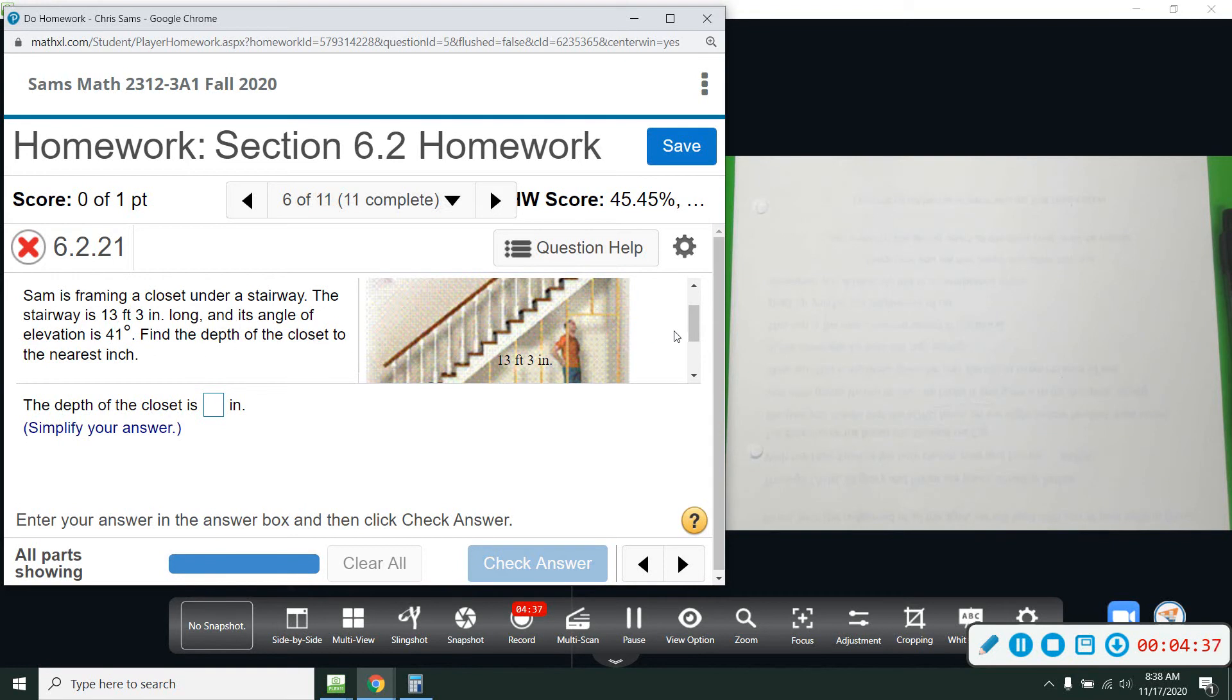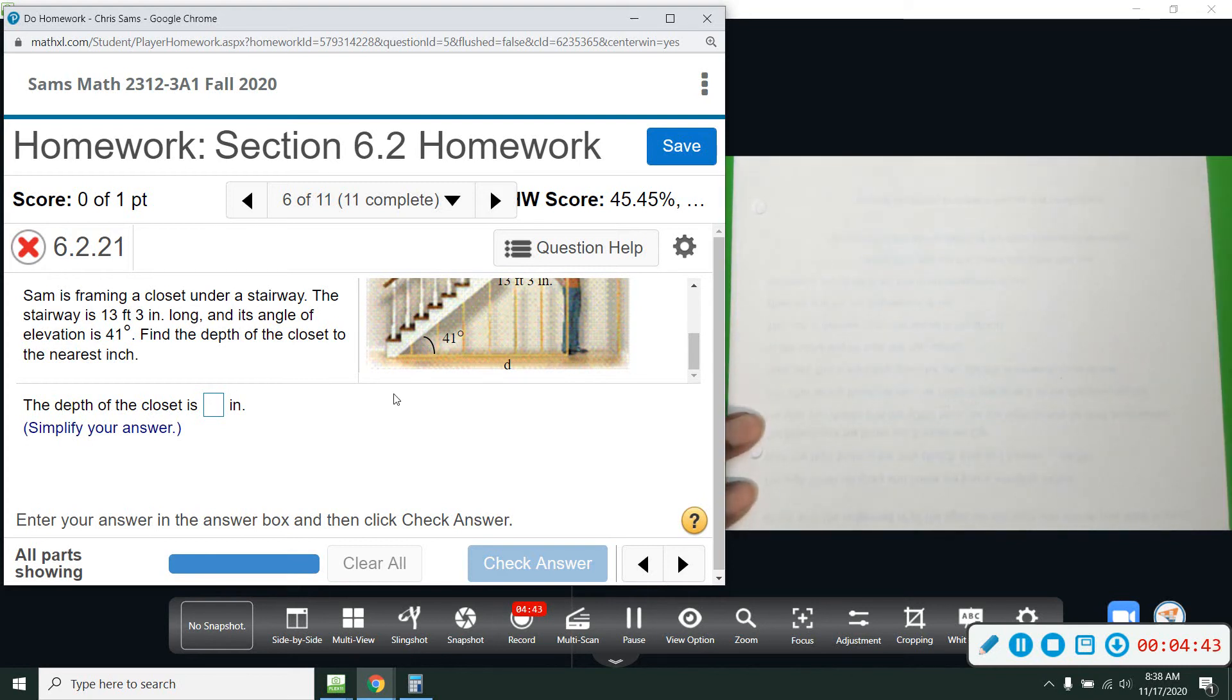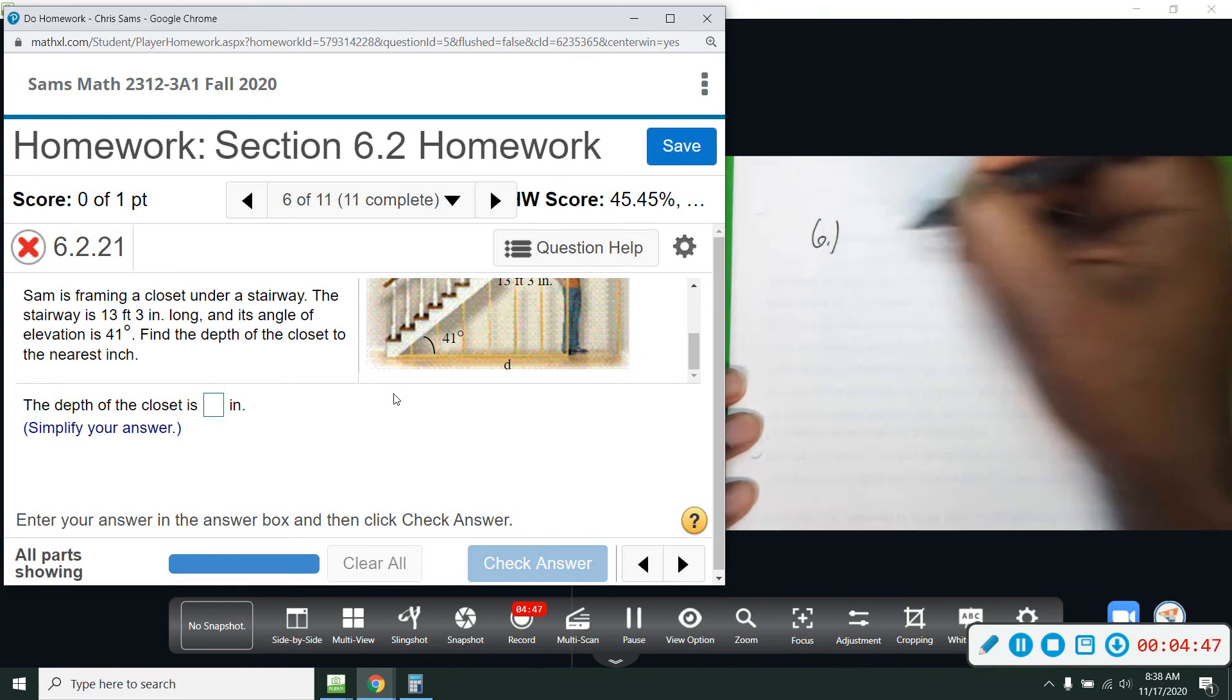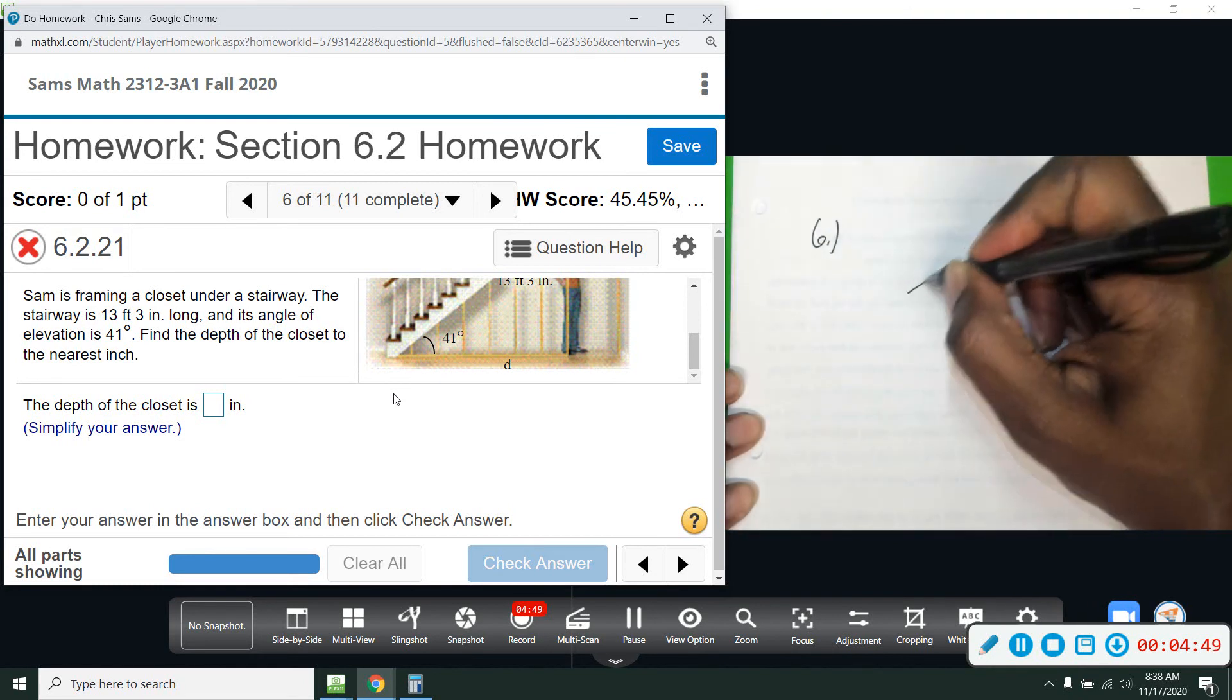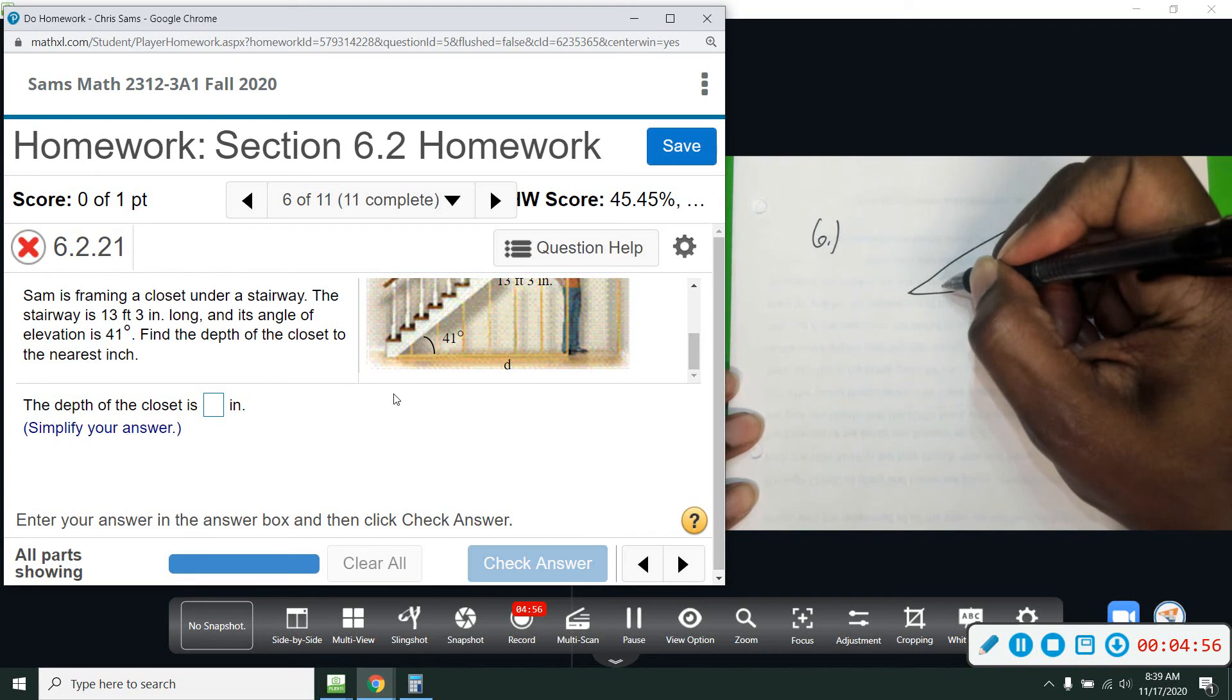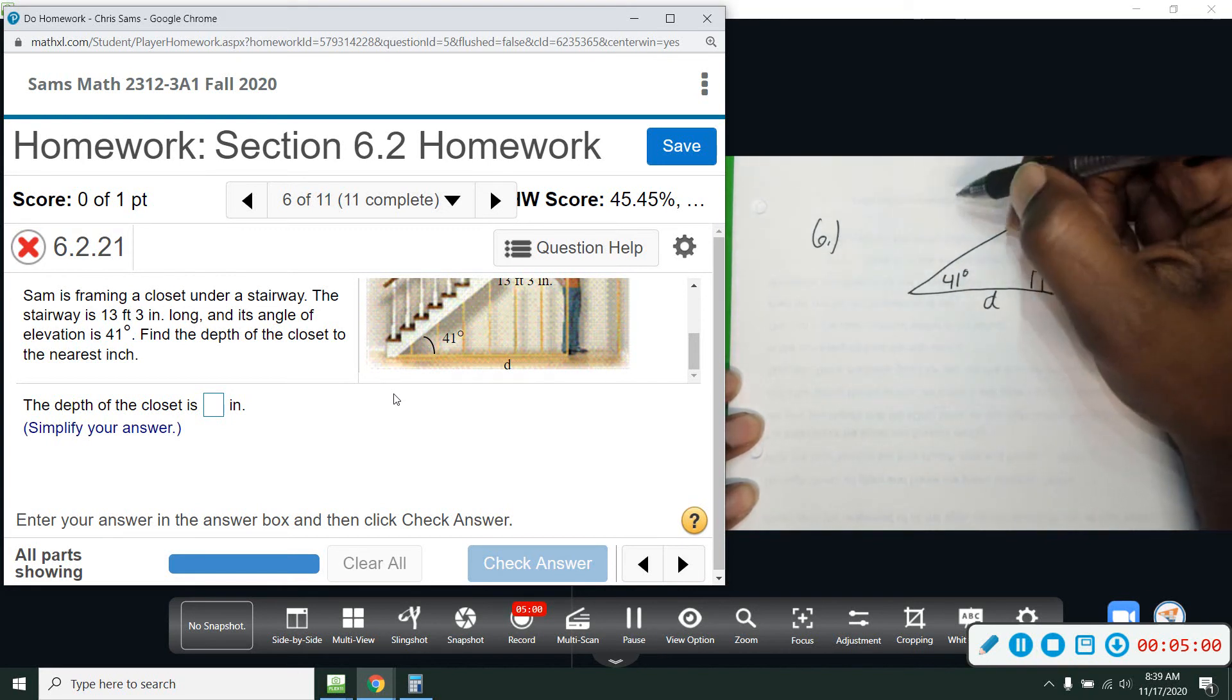Find the depth. So the depth, I'm looking for the length across the bottom. How deep it will be. Alright, so I'll go ahead and draw this triangle. I'm looking for D here. This is 41 degrees and this is 13 feet and 3 inches, 3 over 12.